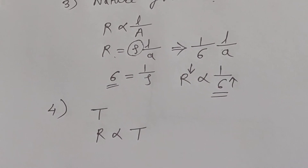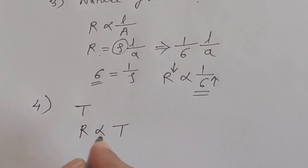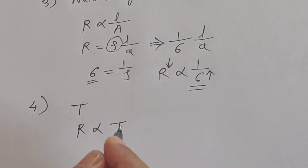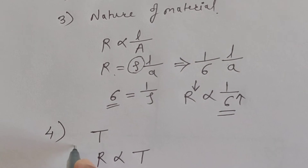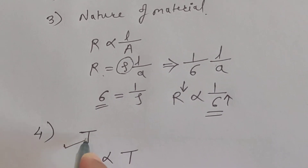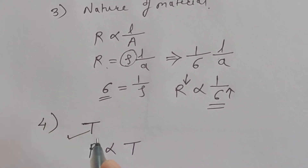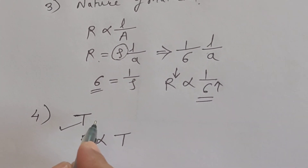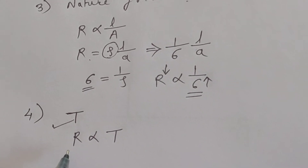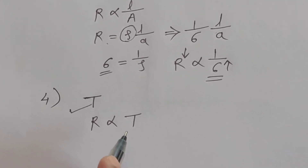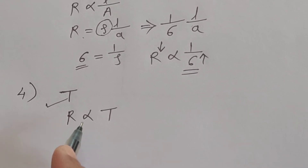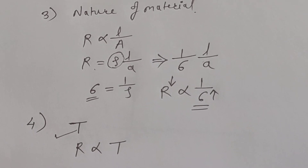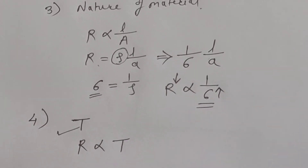As temperature increases, resistance also goes on increasing. These are the four factors on which resistance depends. Now we will discuss in more detail the effect of temperature on resistance for four materials: pure metal, alloy, insulator, and semiconductor.